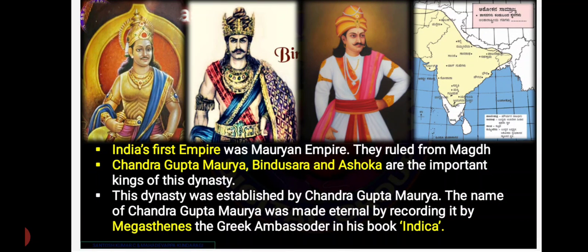The Mauryan Empire was the first empire in India, ruled from Magadha. The important kings are Chandragupta Maurya, Bindusara and Ashoka. The founder was Chandragupta Maurya, which is mentioned in the book Indica by Megasthanes.